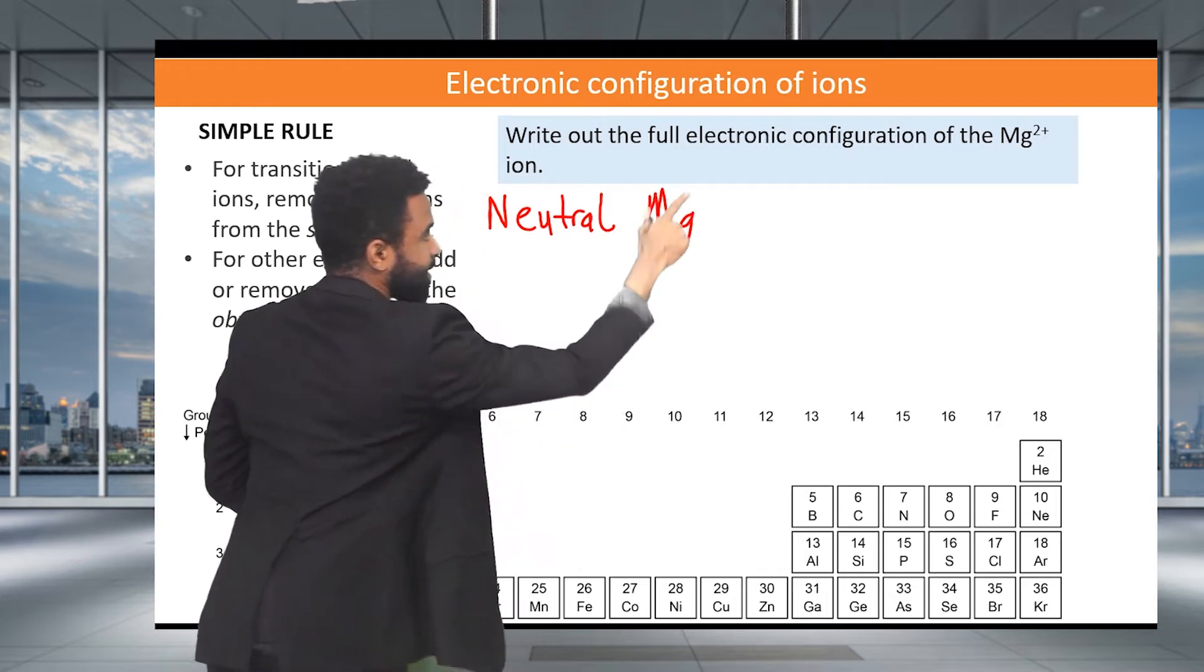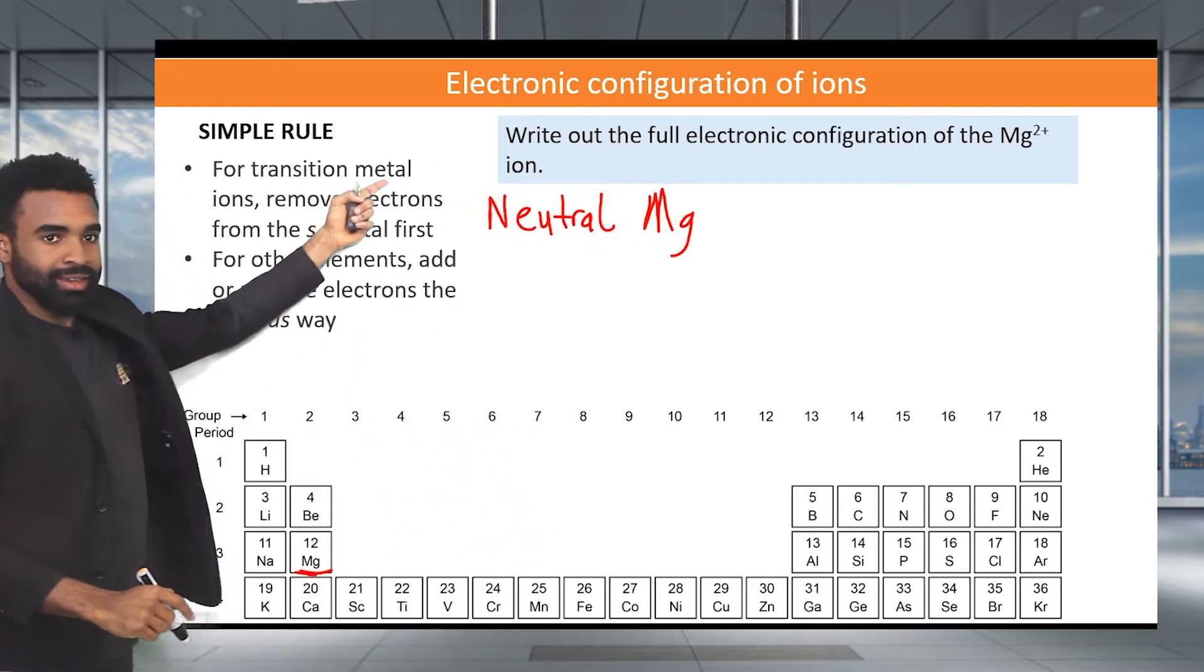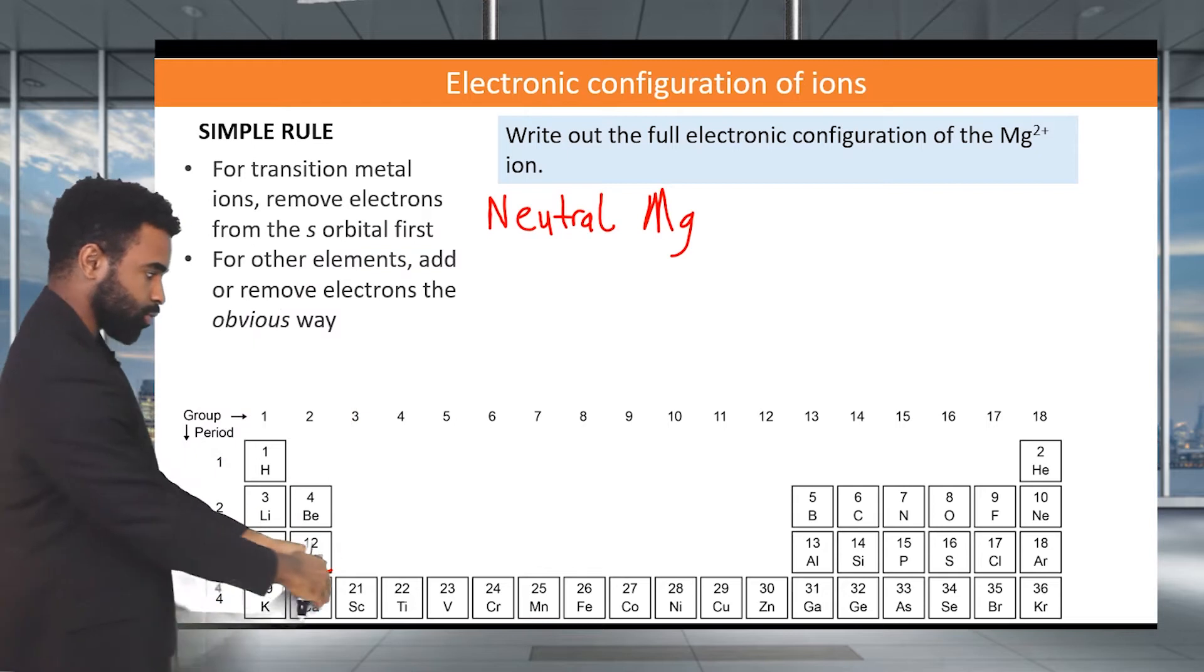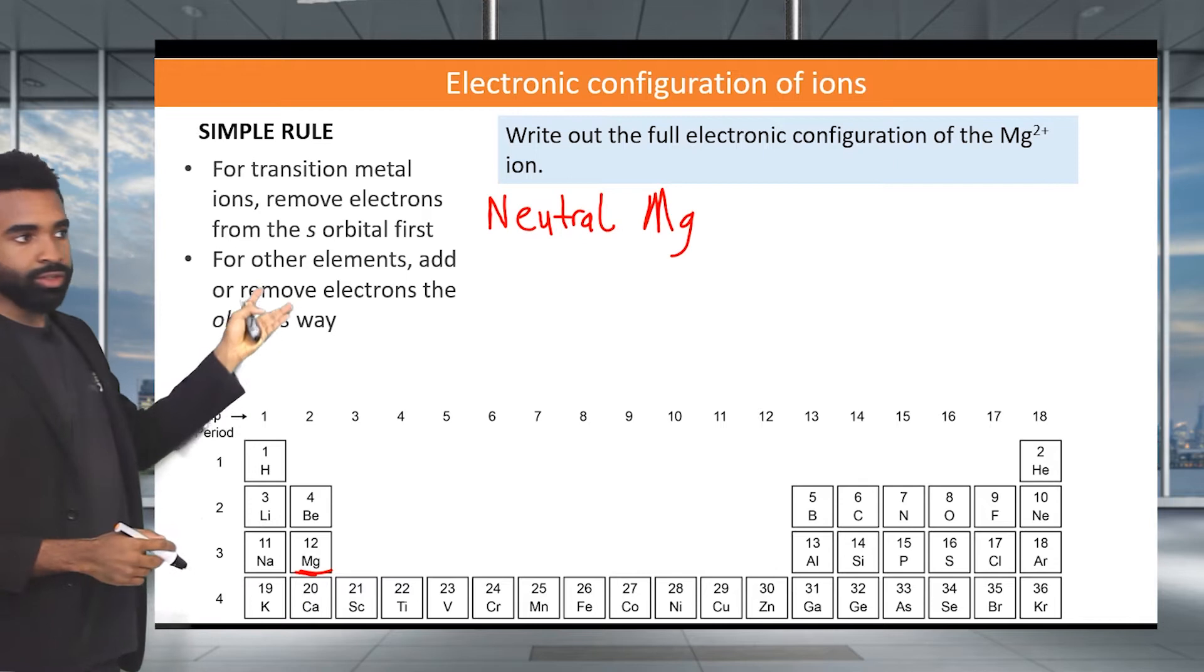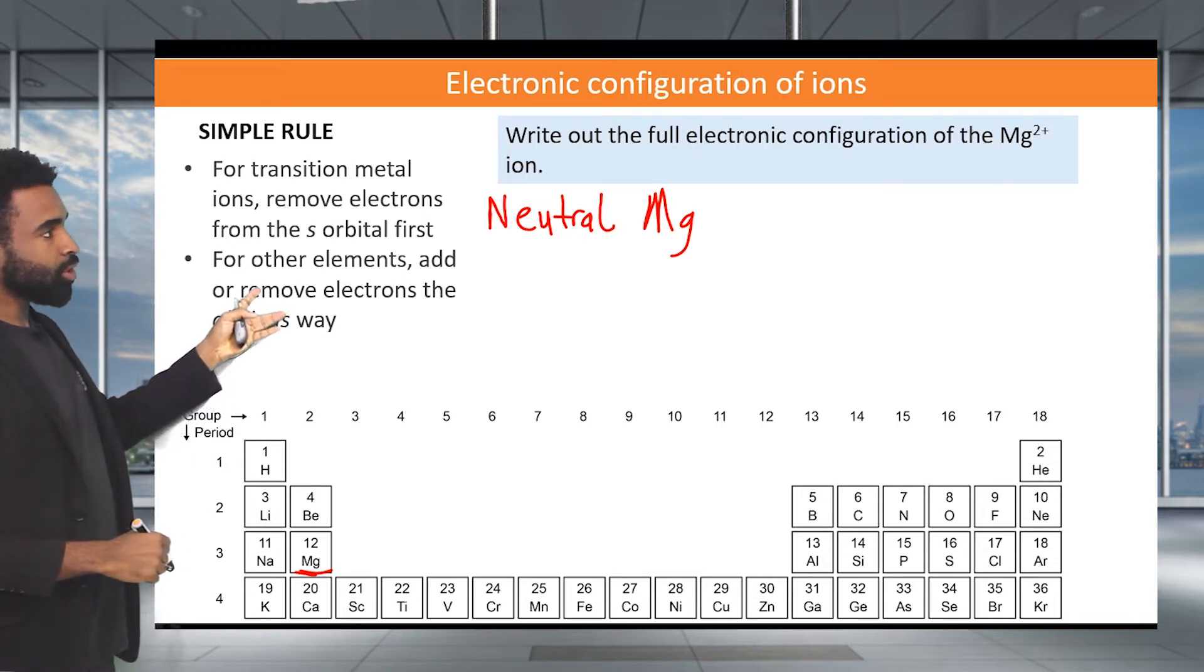And once we've done that, then since this is not a transition metal ion, a transition metal ion will be these ones here in the d block, right? It's not one of those. Therefore, we just use the obvious way and I'll show you what that is now.